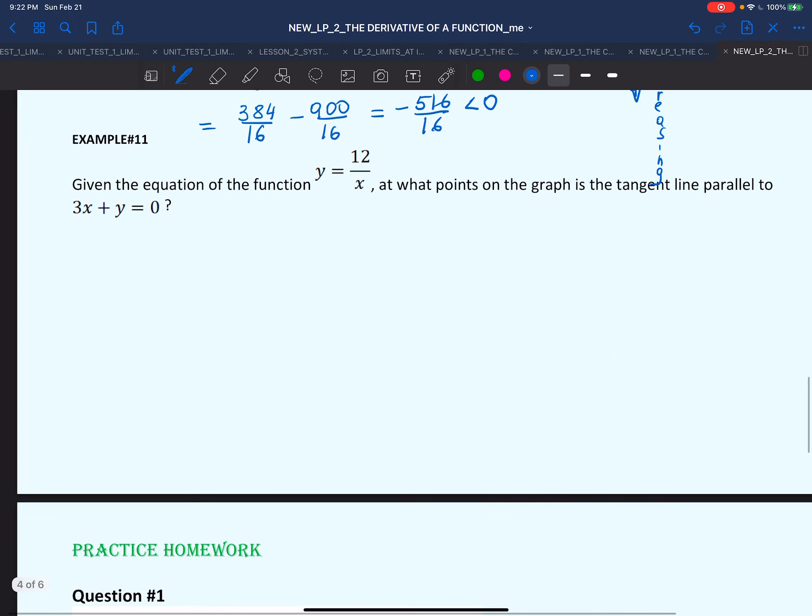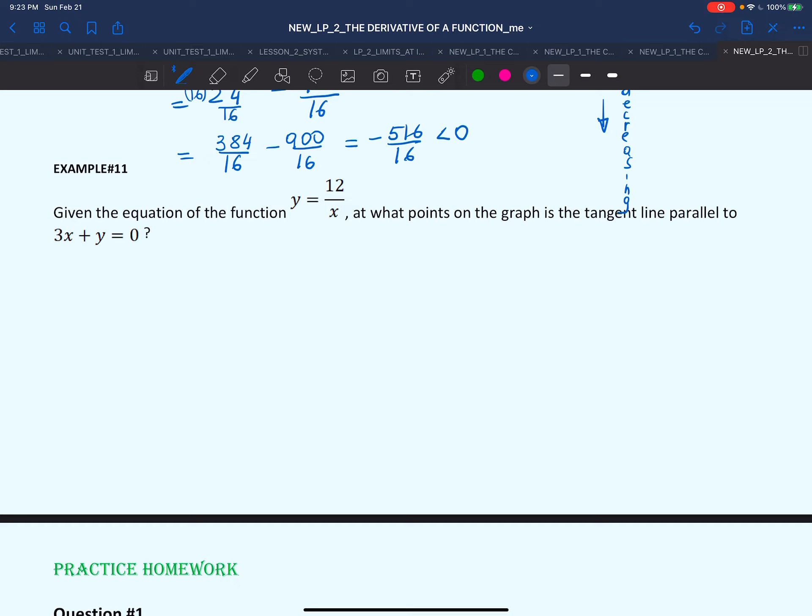In the next example, which is our last example for this lesson, we're finding the equation of a tangent at a point. We are given the equation of the function y = 12/x. This is a rational function, but it can be differentiated as a polynomial, providing that we can rewrite the equation as 12x^(-1). We are asked to find at what points on the graph is the tangent line parallel to 3x + y = 0. We are given the slope of the tangent indirectly.